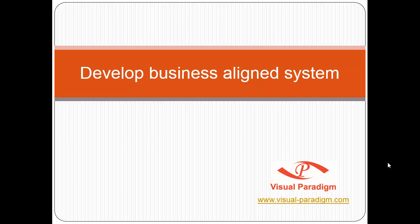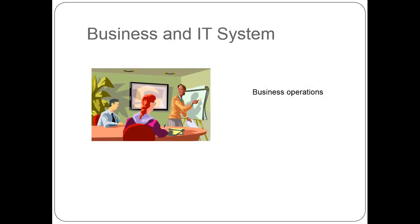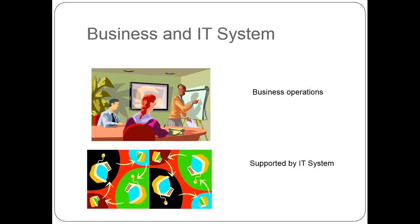This video talks about the process to develop a business-aligned system, covering more than just requirement capturing. Today, IT systems have become a very critical component of a business, especially an efficient and successful business. It's not just an option — it's one of the critical factors to be successful. Most business operations today are supported by a lot of IT systems.